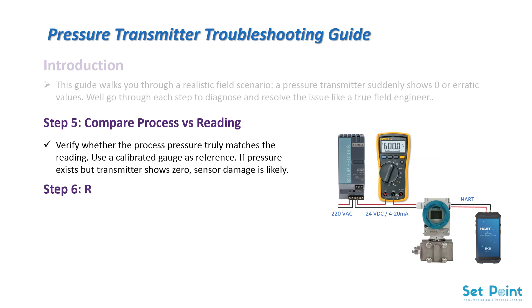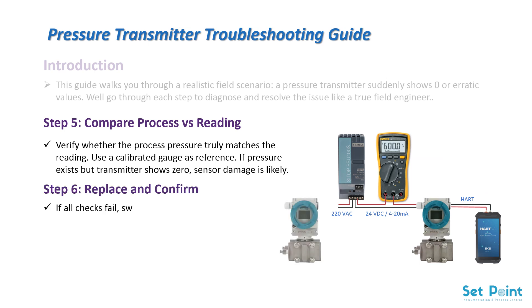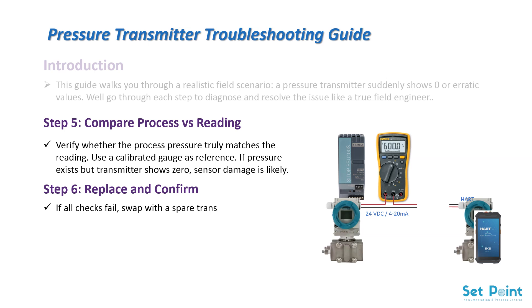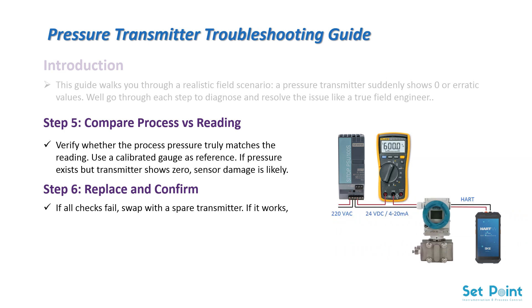Step 6: Replace and confirm. If all checks fail, swap with a spare transmitter. If it works, the original is defective. Send it for calibration or replacement.